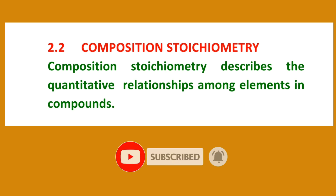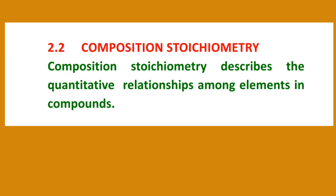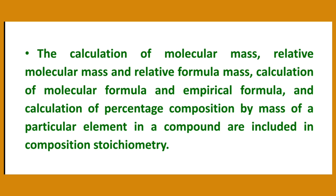2.2 Composition Stoichiometry. Composition Stoichiometry describes the quantitative relationships among elements in compounds. It includes the calculation of molecular mass, relative molecular mass, and relative formula mass, as well as the calculation of molecular formula and empirical formula, and the calculation of percentage composition by mass of a particular element in a compound.